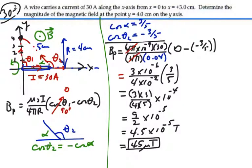So the magnetic field at point P is forty-five microtesla, and it's coming out of the page towards you. So that's the magnetic field at that point.